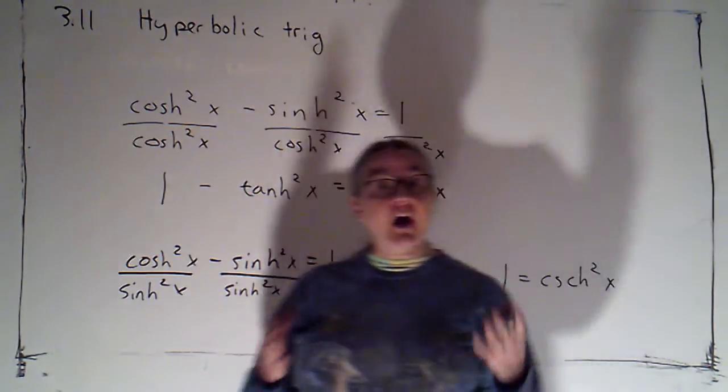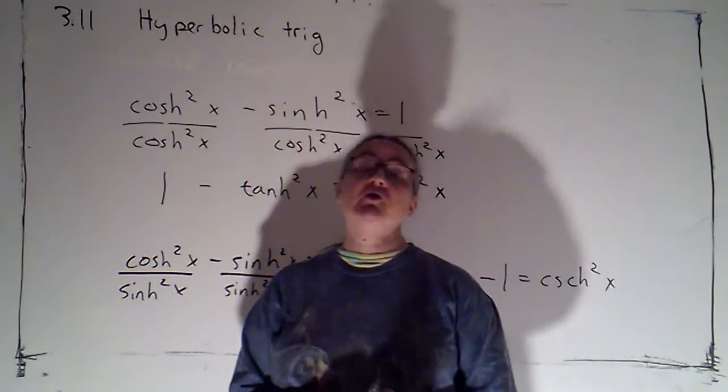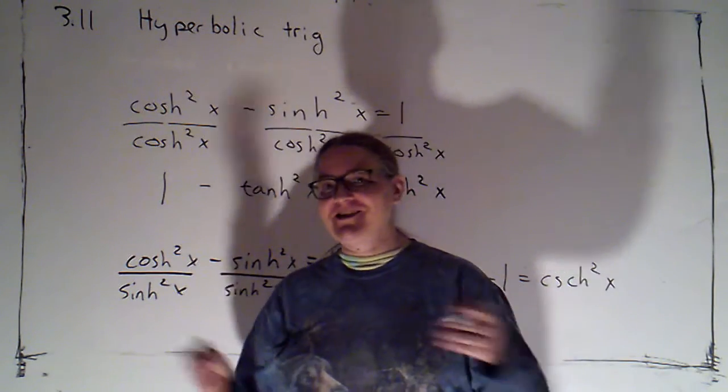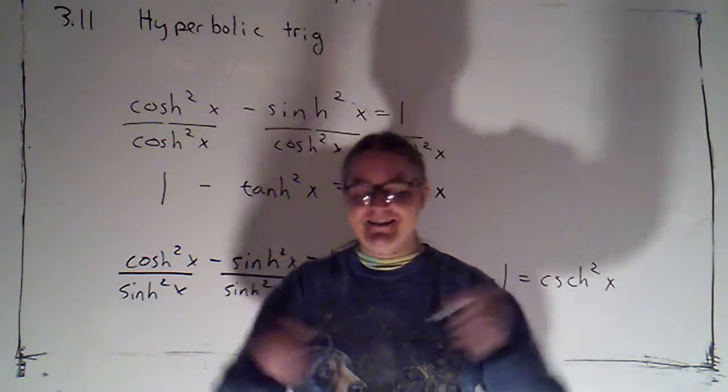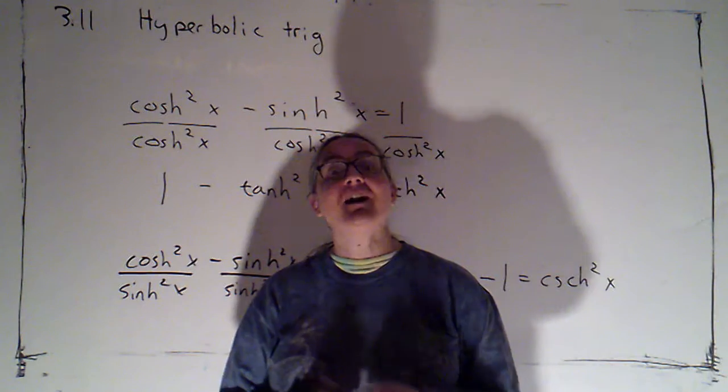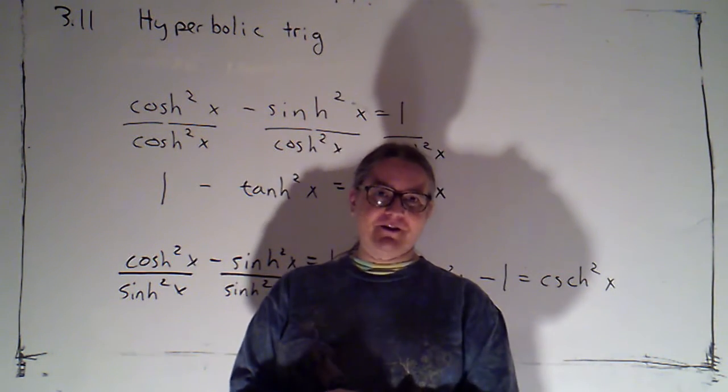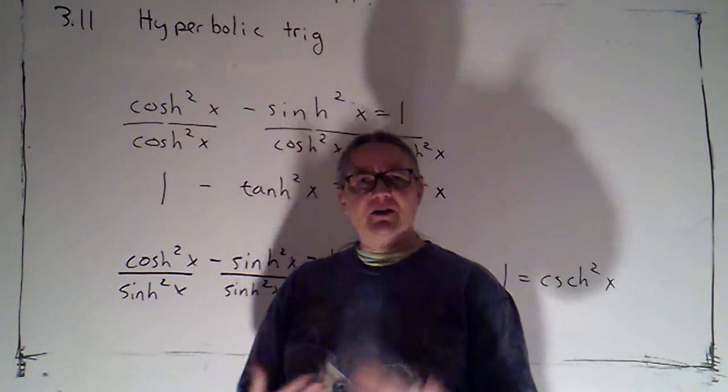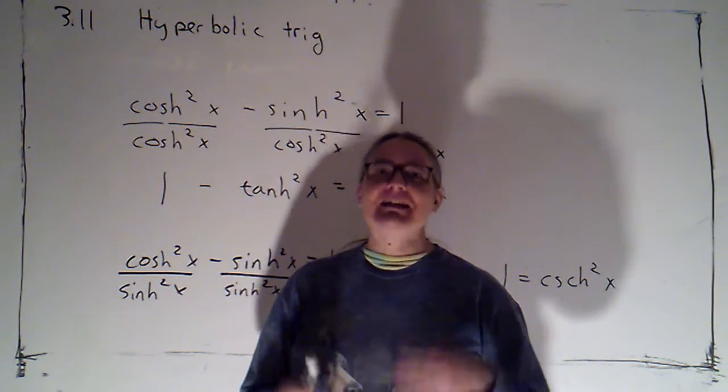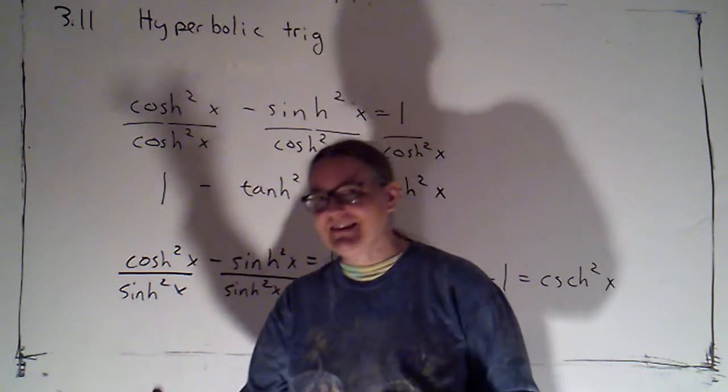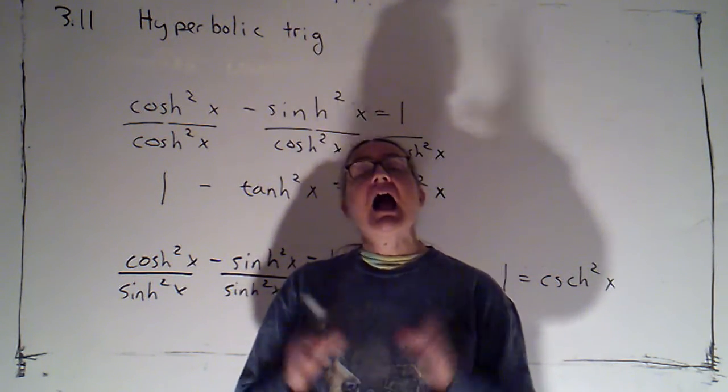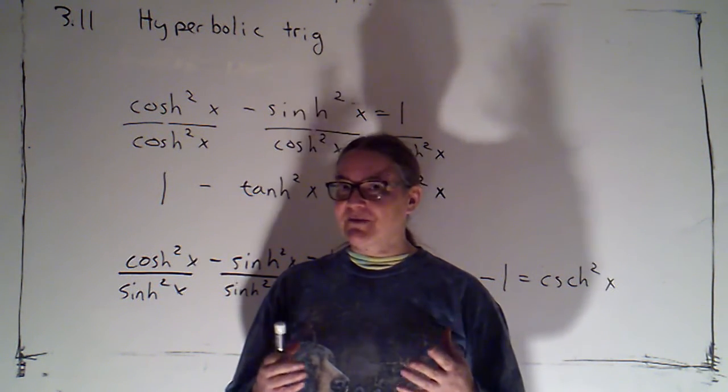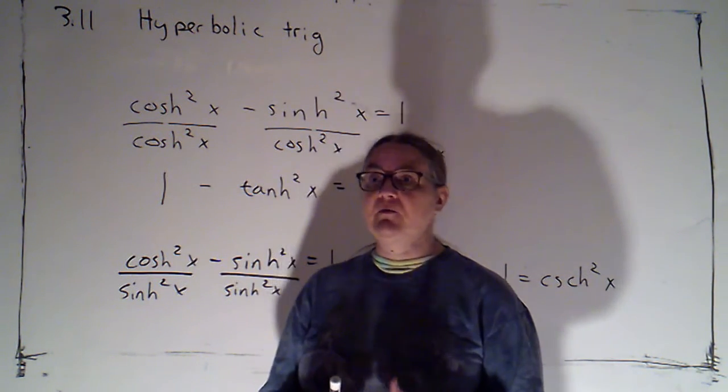I should also mention there are other identities presented in your textbook. There's a sum formula and a difference formula for cosh and sinh. And then that can be translated into sum and difference formulas for the other hyperbolic trig functions. And then we can get double angle formulas, or not really double angle because we're not really thinking of them as angles, but we can get a formula for cosh of 2x and sinh of 2x and all sorts of things. I'm not going to hold you responsible for those. There are lots and lots more identities that we could work with, but we won't be working with.